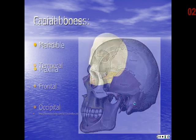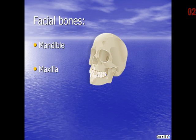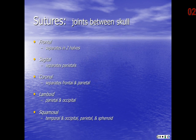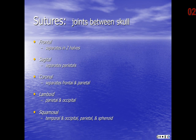There are several facial bones, but there are only two you're expected to know in this class. The mandible is the lower jaw bone and the maxilla is the upper jaw bone. The sutures are the joints between the skull bones. We have the frontal, sagittal, coronal, lambdoidal, and squamosal sutures. The frontal suture separates the frontal bone into two halves. The sagittal suture separates the parietal bones. The coronal separates the frontal and parietal. The lambdoid separates the parietal and occipital, and the squamosal separates the temporal, occipital, parietal, and sphenoid bones.